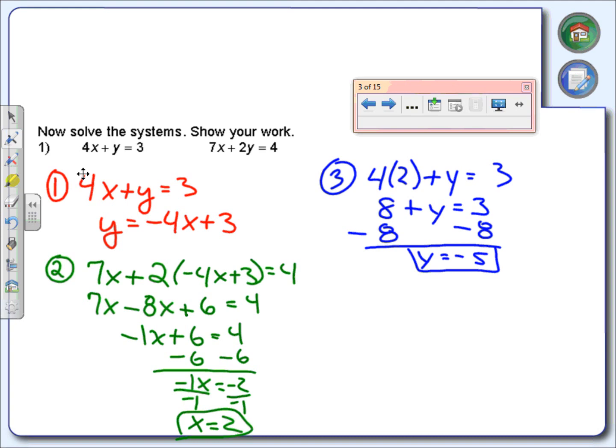However, don't leave your answer like that. I want you to write these answers as ordered pairs. So what's the ordered pair going to be? 2, negative 5 or negative 5, 2? 2, negative 5. The x value has to come first. So there's our solution to the system.